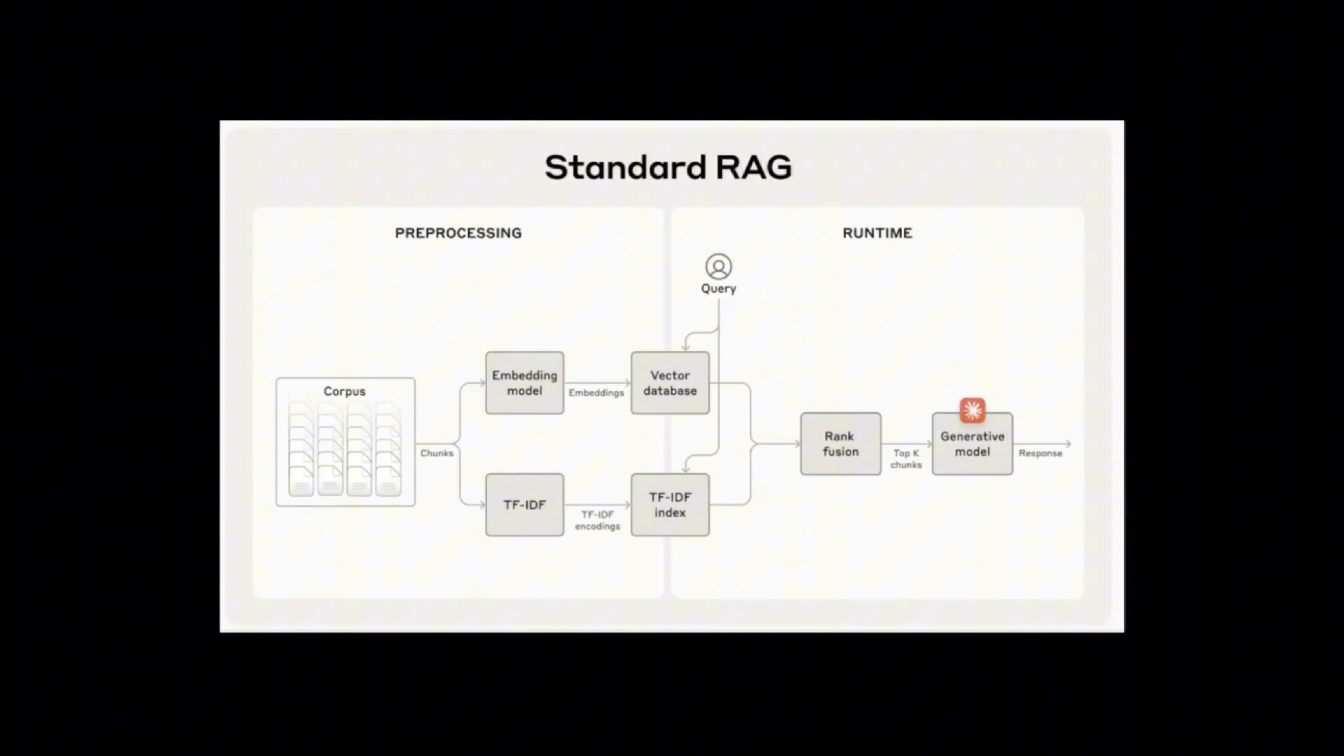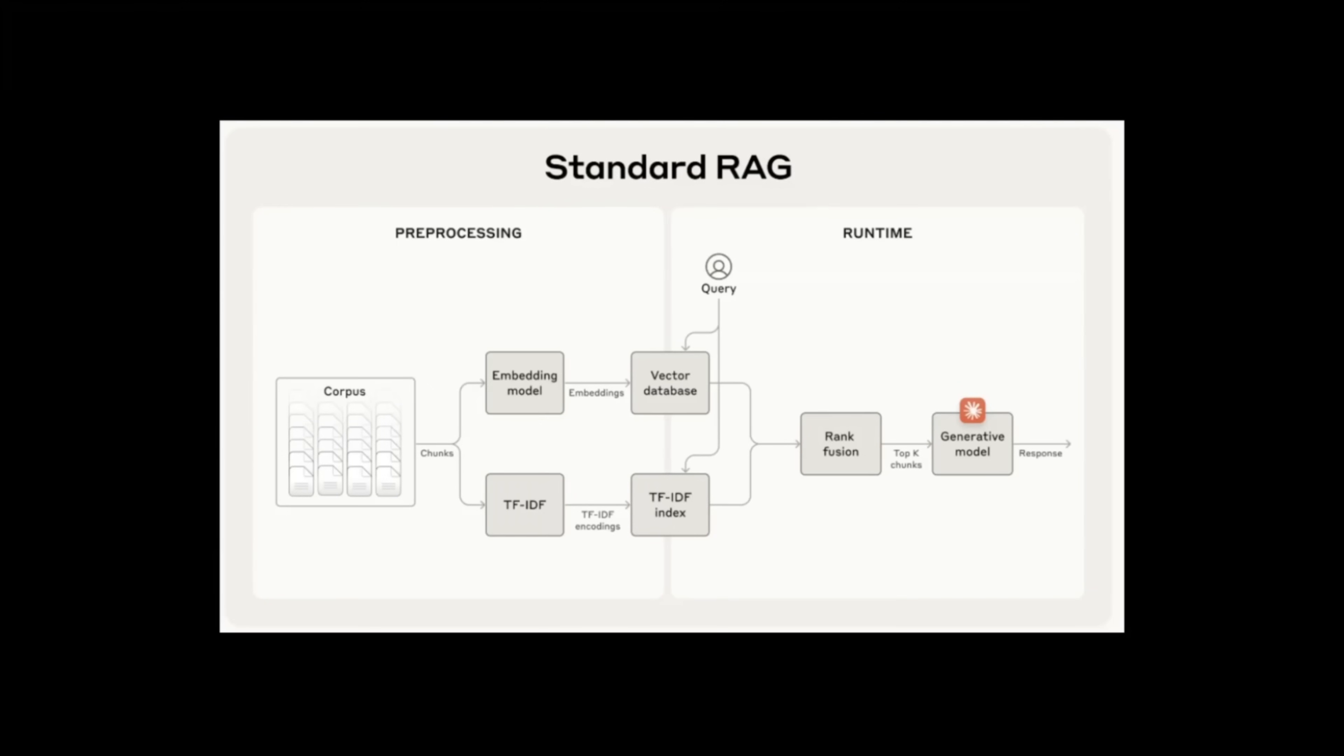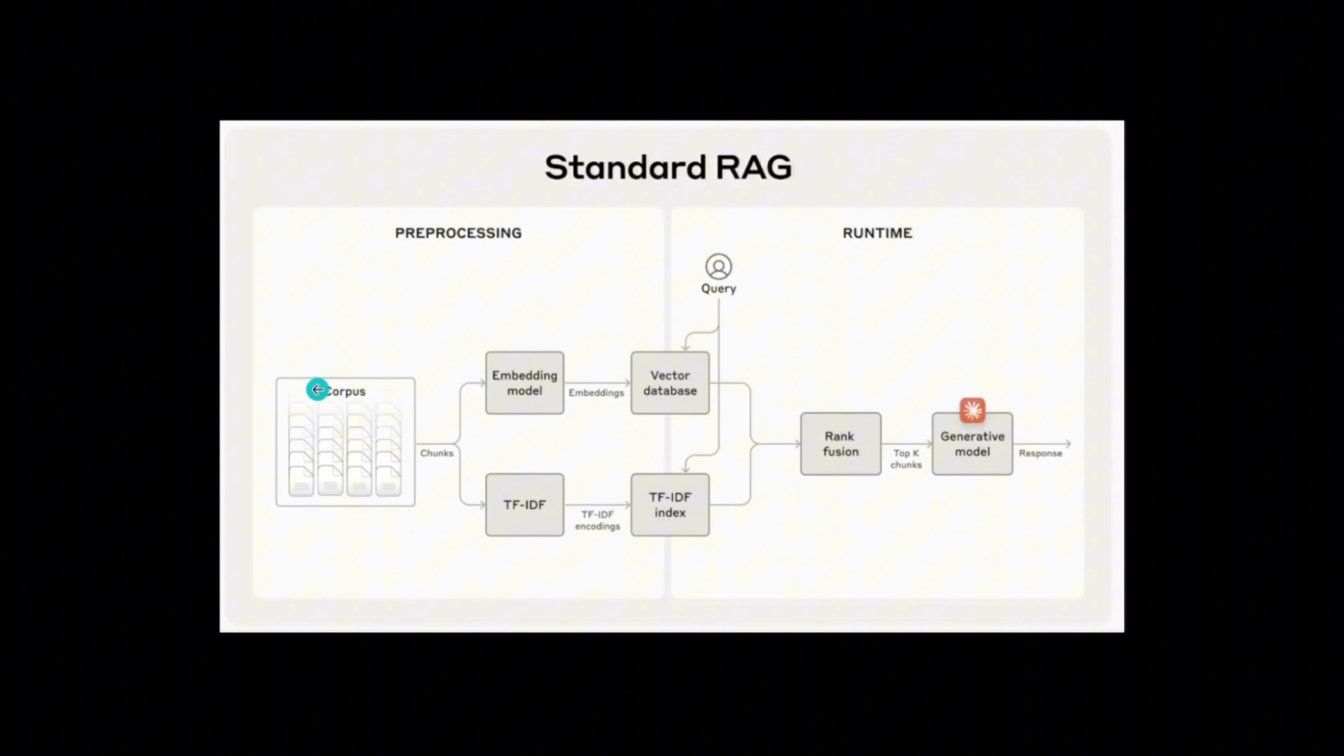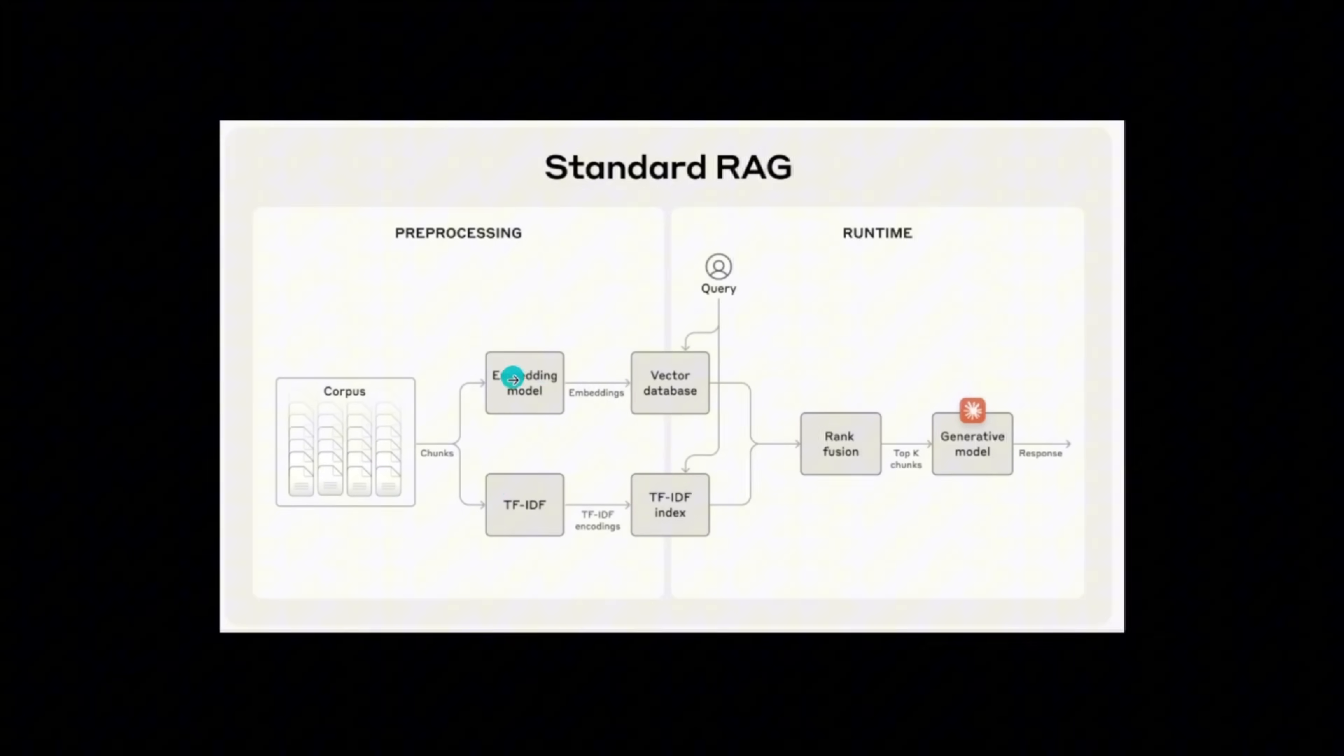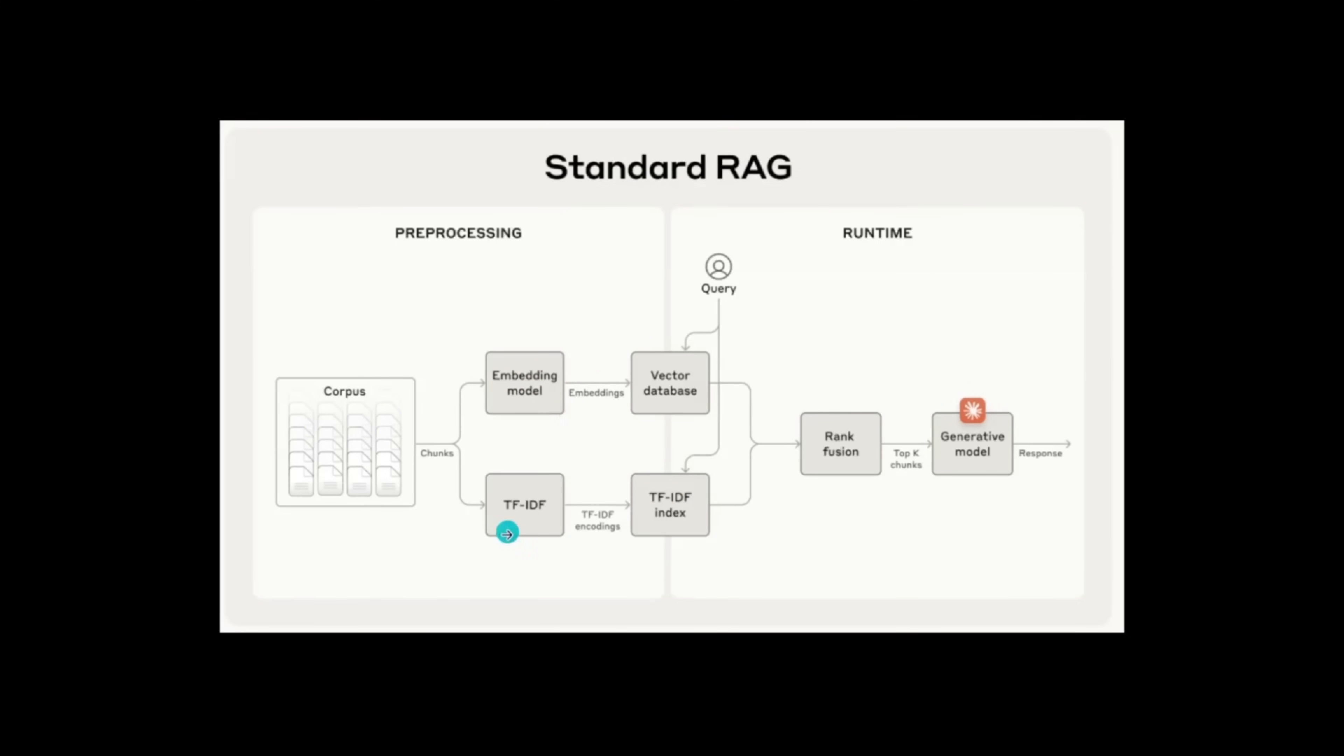Before understanding this, let's look at a standard RAG system. You have your document, you divide it into smaller chunks, and normally feed those through a dense embedding model. Sometimes people also add full text search, and then they do retrieval on top of that. The problem is that every chunk that you create lives in isolation, and it doesn't have any context of its surrounding chunks or the global document.